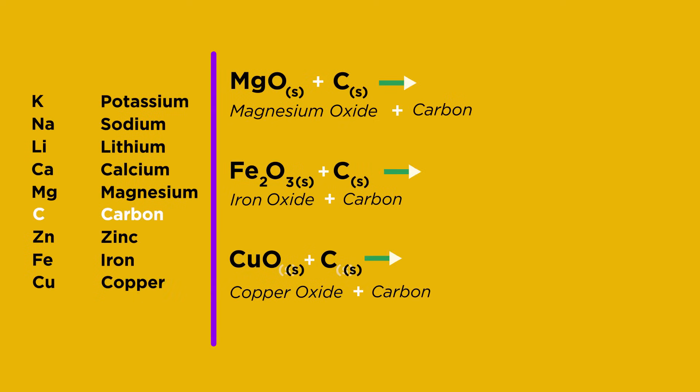We added the element carbon to the reactivity series at the start of this video so now let's use it. Decide which of these reactions will go and name the products. Here's a hint, carbon oxide is carbon dioxide. Pause the video and have a think. Were you right?